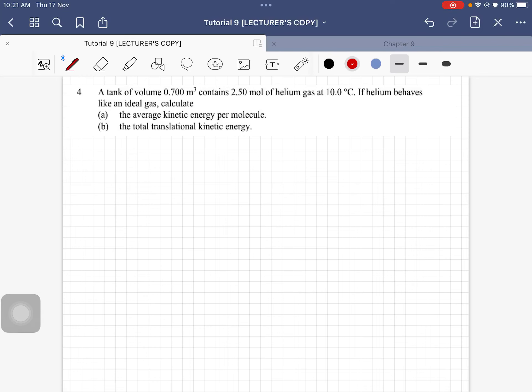Question number 4. We have a tank of volume 0.7 cubic meter contains 2.5 moles of helium gas at 10 degrees Celsius. So if helium behaves like an ideal gas, you have to calculate the average kinetic energy per molecule and the total translational kinetic energy. So volume is given as 0.7 cubic meter.